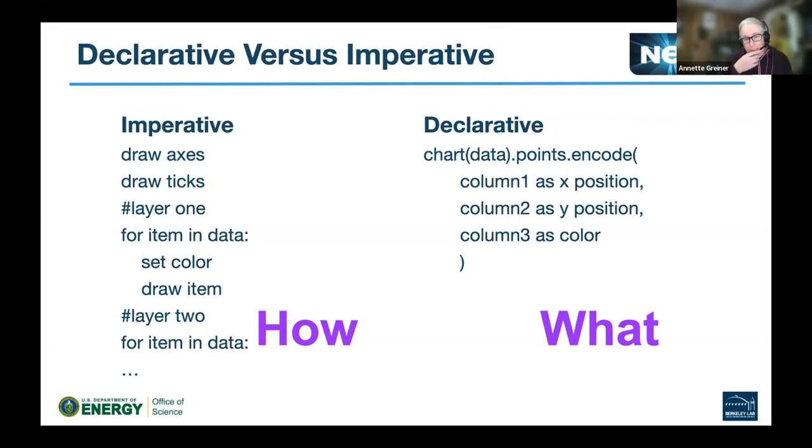So, for example, here, this is just kind of fake code, but you're going to separately draw the different axes and maybe the ticks. And maybe for each layer of data that you have in there, you have to set it to a certain color and draw an item.